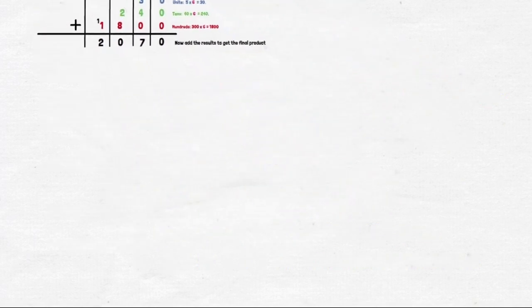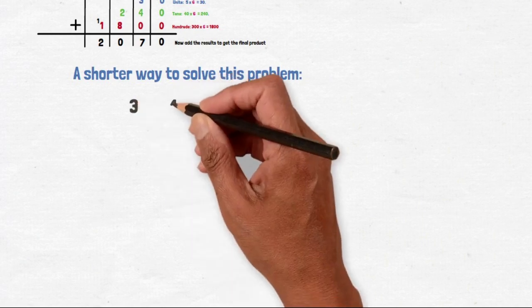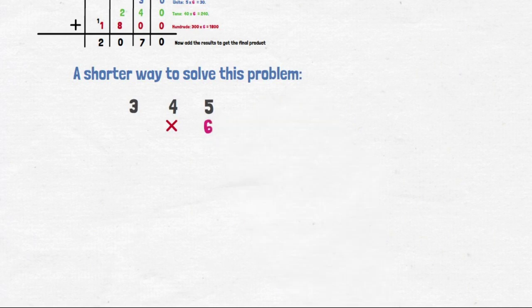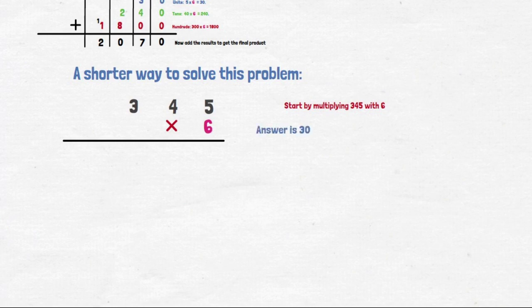Now let's look at a short way to solve this problem. We start by multiplying the units first. 5 times 6 is 30. So we write the 0 and carry the 3 over.